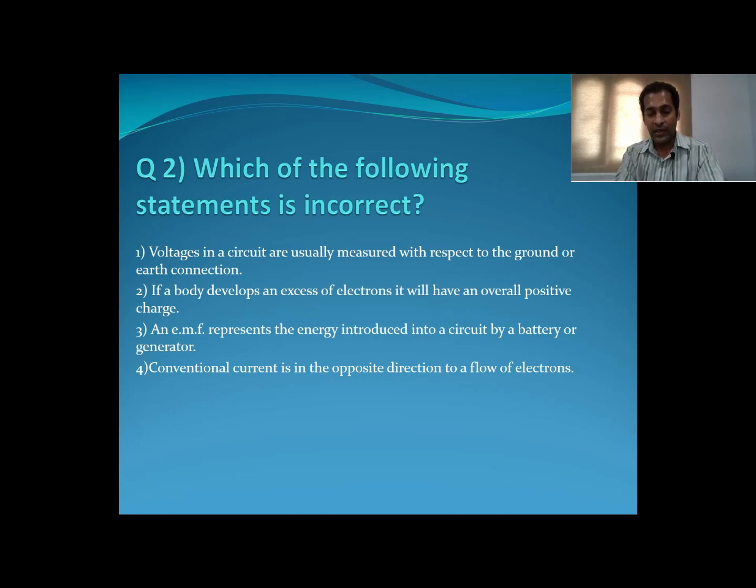If a body develops an excess of electrons, it will have an overall positive charge. And EMF represents the energy introduced into the circuit by a battery or generator. Conventional current is in the opposite direction to flow of electrons.